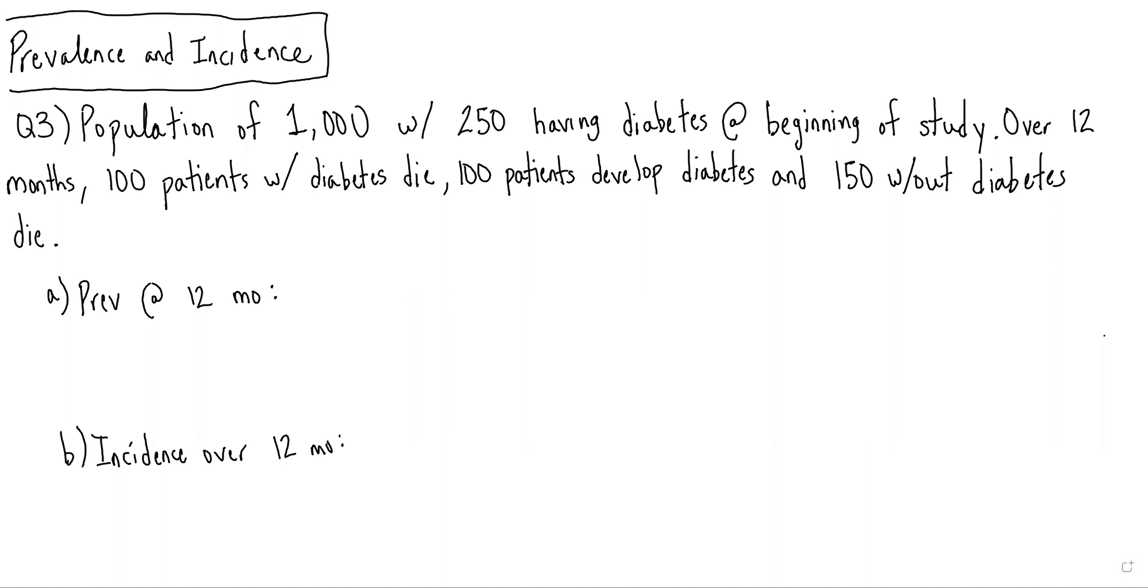First, we're asked to calculate the prevalence at 12 months. Remember that prevalence is the total number of patients with the disease over the total number of patients in the population.